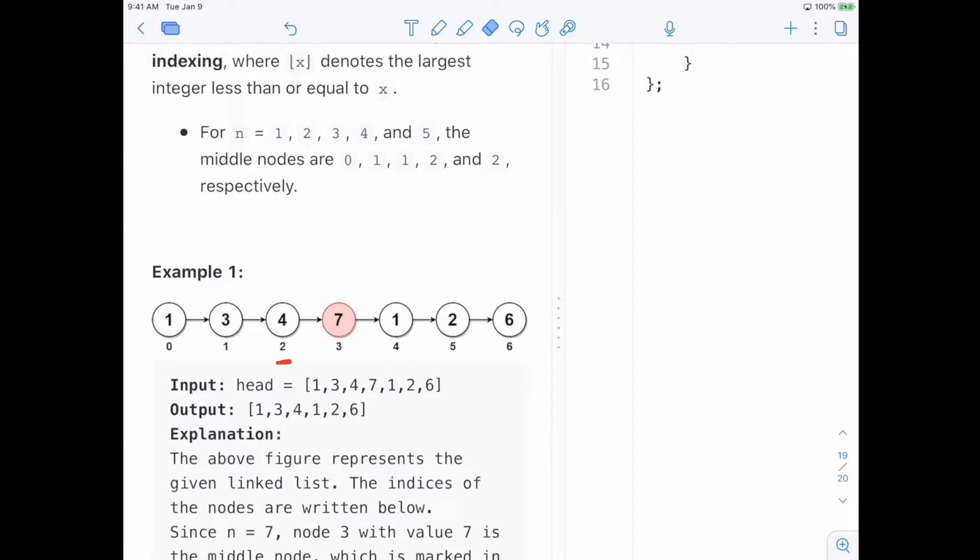And this is like a classic linked list problem, where basically using the slow and fast pointer technique with a linked list, what you can do is just put slow at one position, and fast needs to always maintain being the next of the next of the slow.